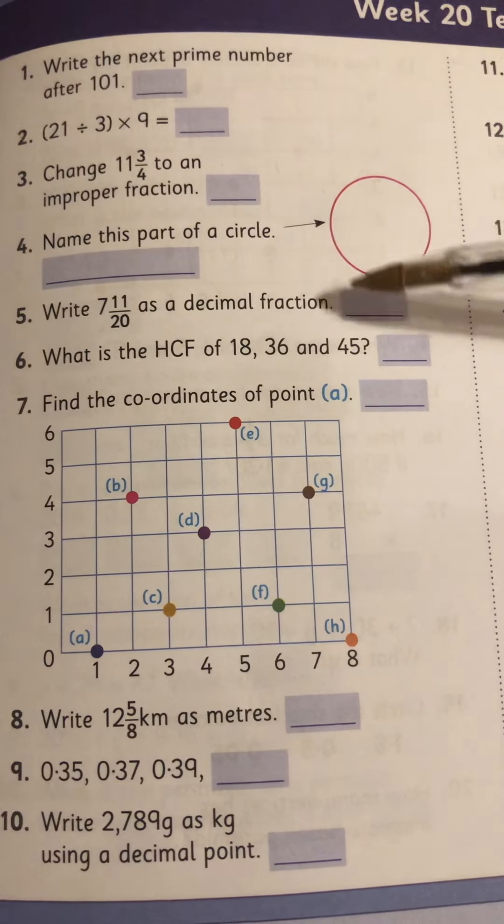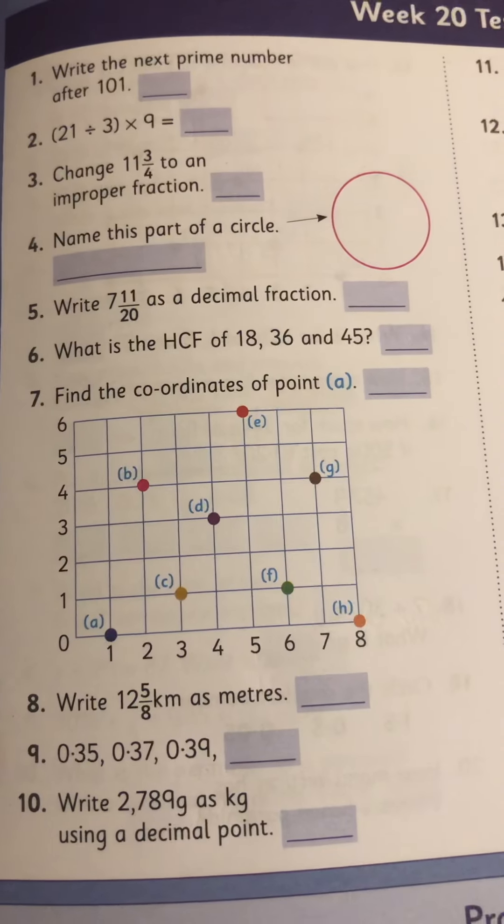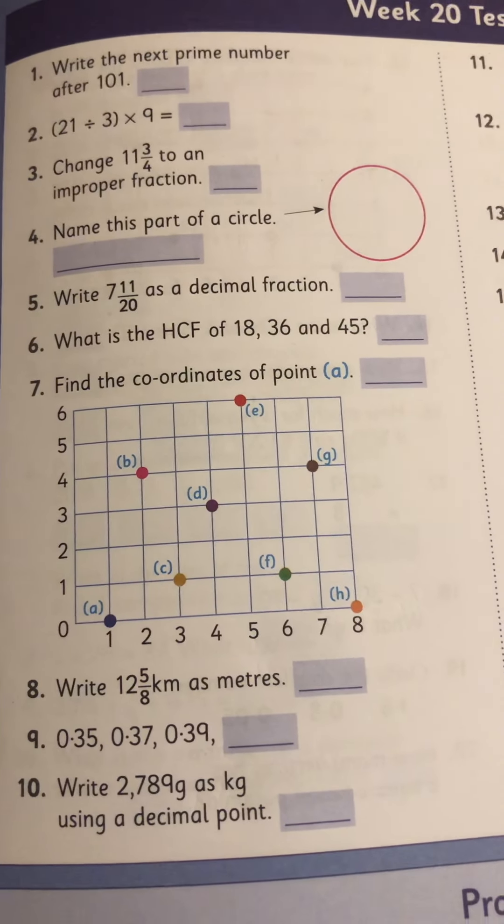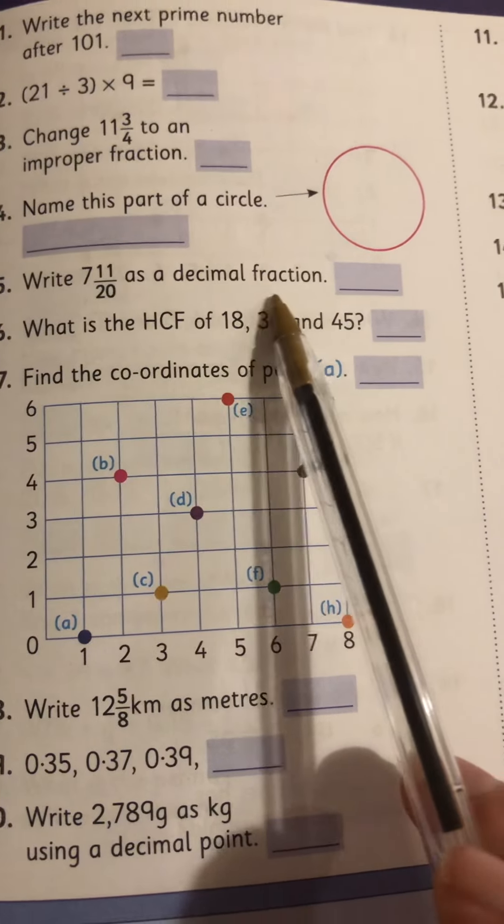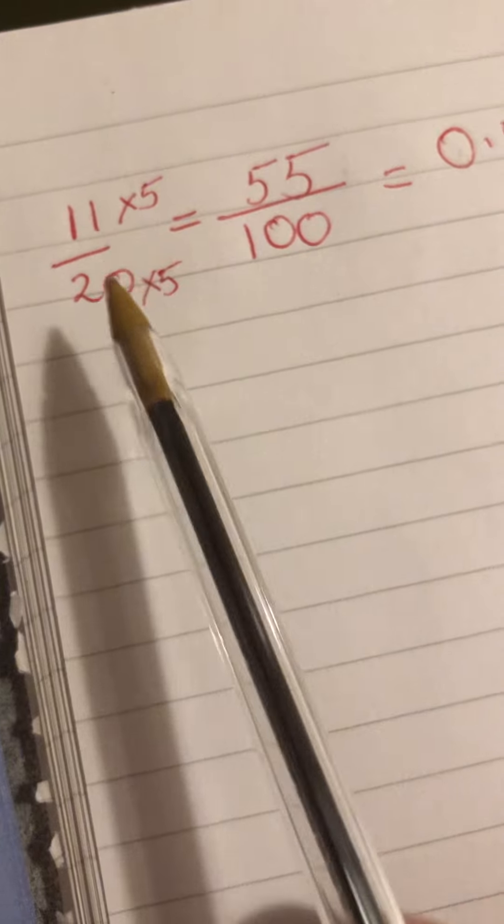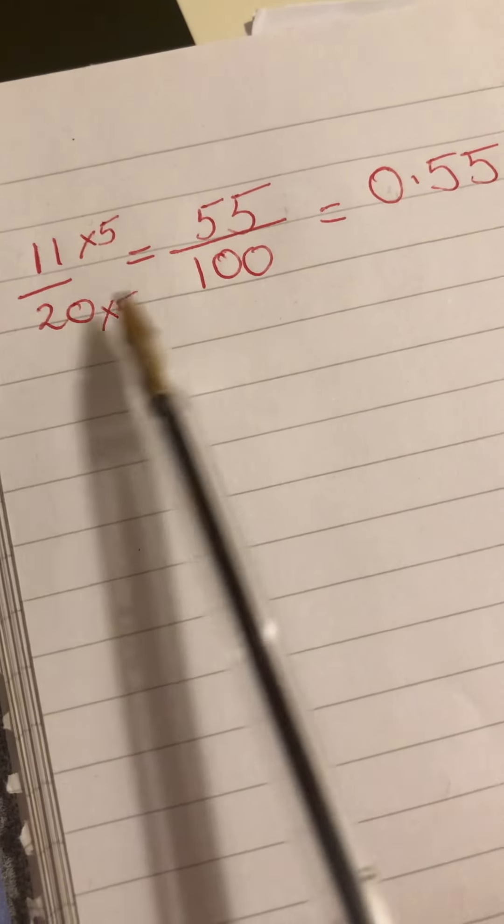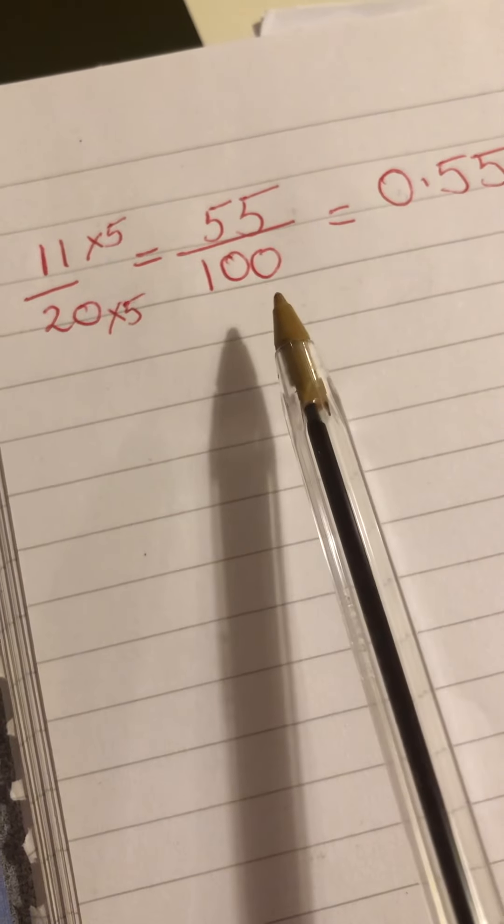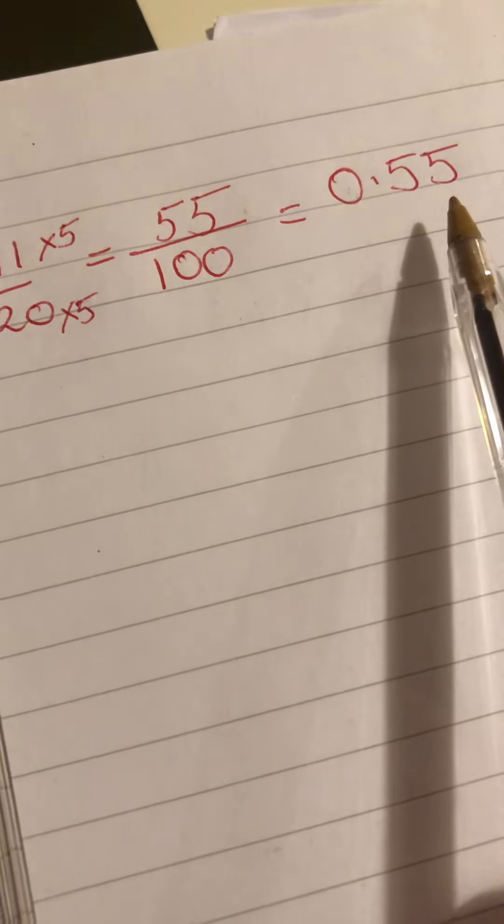This part of the circle, if you haven't come across it, it's a circumference. Number 5, write 7 and 11 twentieths as a decimal fraction. So if you're writing 11 twentieths as a decimal, you have to have it over 100 before you can write it as a decimal. So 11 twentieths is the same as 55 over 100 and that is a decimal of 0.55.